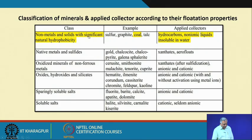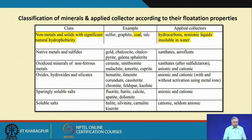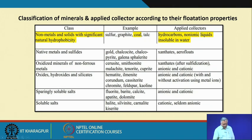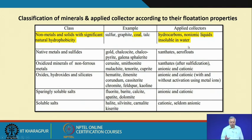Non-metals and solids with significant natural hydrophobicity — for example sulphur, graphite, coal, and talc — the applied collectors are hydrocarbons: non-ionic liquids insoluble in water. These are only general guidelines. For native metals and sulphide minerals — examples like gold, chalcocite, chalcopyrite, galena, and sphalerite — normally xanthates and aerofloats are used as collectors.